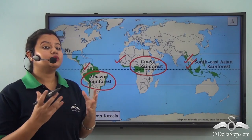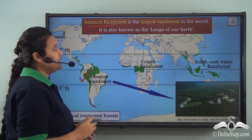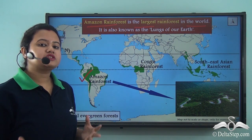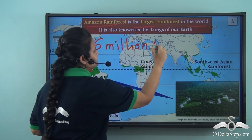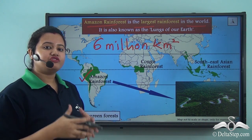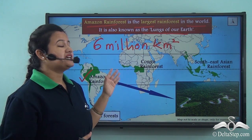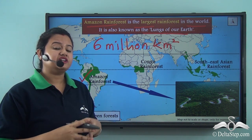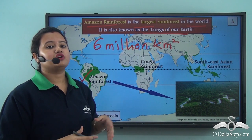Among all these rainforests, the Amazon rainforest in South America is the largest rainforest in the world, covering an approximate area of six million square kilometers. Since it covers such a huge area, this rainforest is also referred to as the lungs of the world or the lungs of our Mother Earth. This is because it absorbs a large amount of carbon dioxide and releases tons of fresh oxygen into the air, acting like an important respiratory organ.